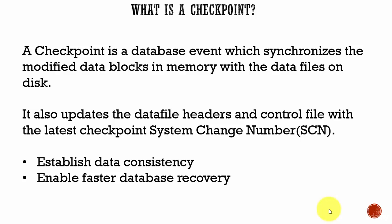In this session let's learn about the checkpoint process. A checkpoint is a database event which synchronizes the modified data blocks in memory with the data files on disk. Whenever a checkpoint happens, all the dirty buffers present in the database buffer cache will be written to the data files. When a checkpoint occurs it also updates the data file headers and the control file with the latest checkpoint system change number, also called SCN.